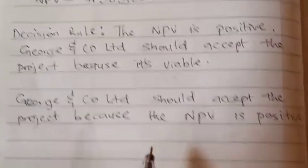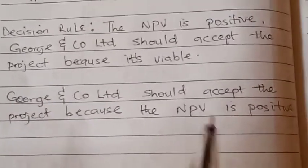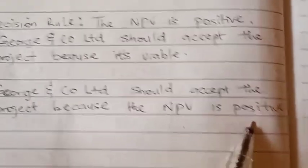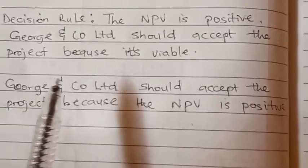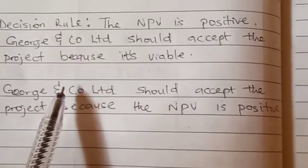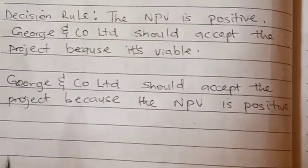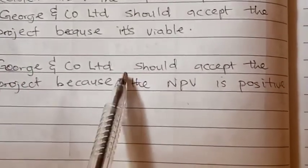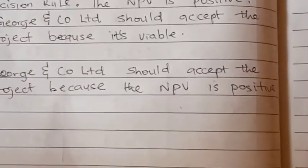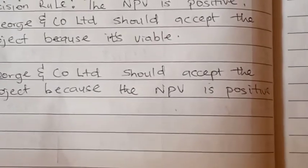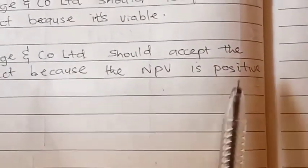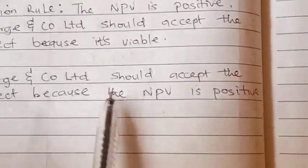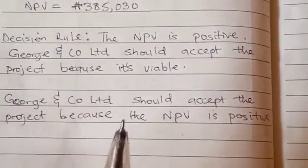You can also say George and Co Limited should accept the project because the NPV is positive. So whichever way you want to put it, the keywords should be there: the NPV being positive, and you must address the company because you are advising them, so their name should be there.